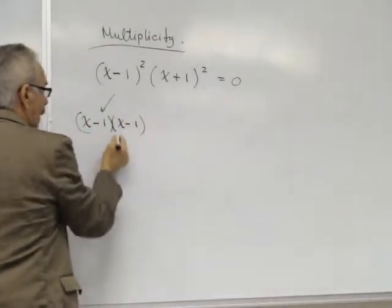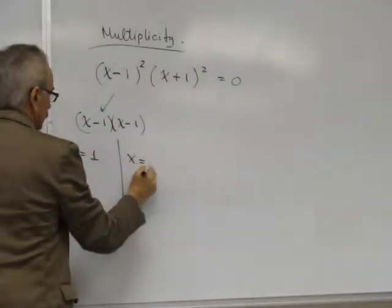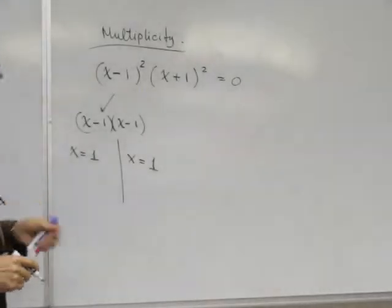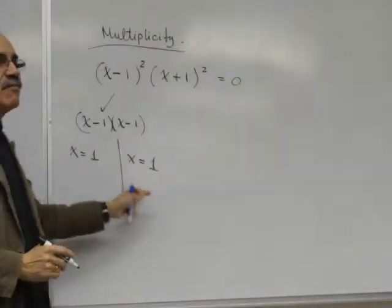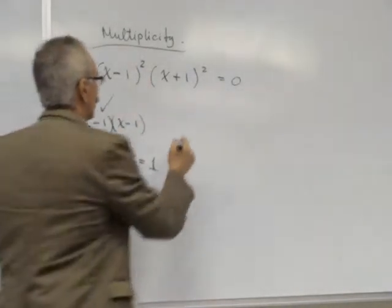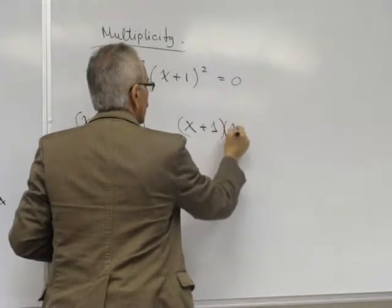What we have here is x minus 1 and x minus 1, because this solution is repeated two times. The multiplicity is even, two times. The other one also is repeated two times, it's the same solution two times, the multiplicity is two.